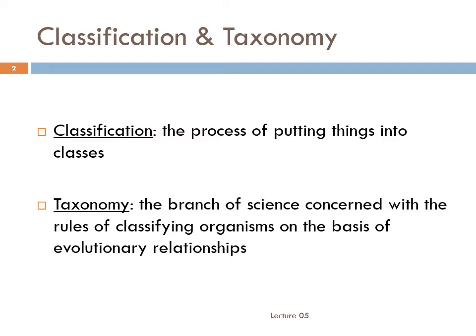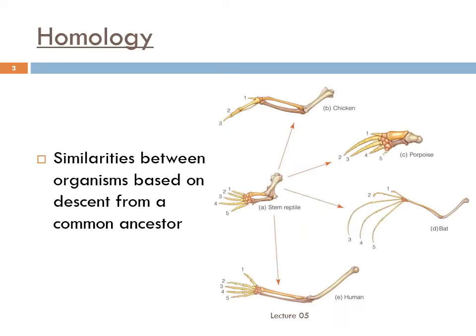Traditionally, those categories have been based on the physical similarities between different animals. Linnaeus was the first person to really systematize the process, and he introduced the idea that categories should be hierarchically nested. Small categories contain a few species that are very similar to one another, and those are then lumped into larger categories that contain more species but with more differences from one another. Linnaeus based the larger and smaller categories of his system on homologies — similarities between organisms based on descent from a common ancestor.